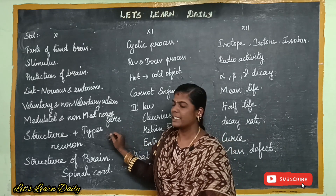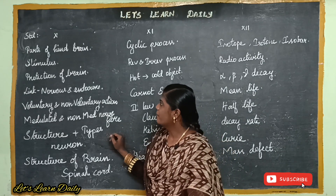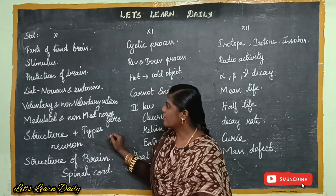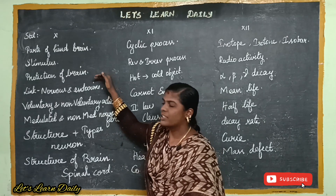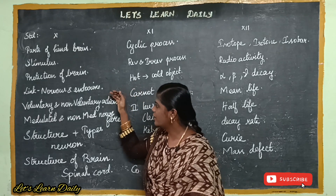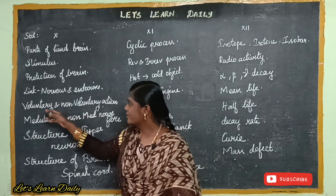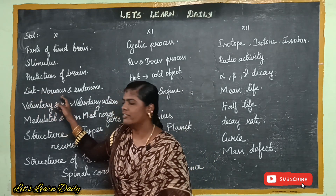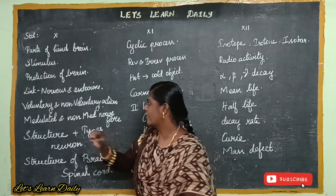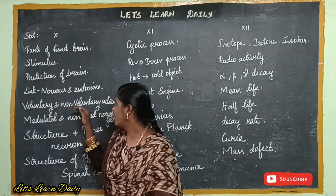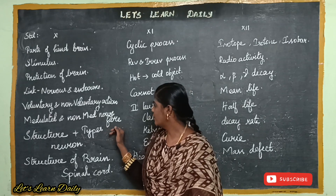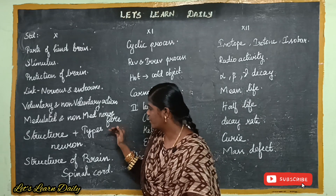We will talk about parts of the brain. What is the next stimulus? Name the structures involved in protection of the brain. What is the link between the nervous and endocrine system? That is one word. We will differentiate voluntary and non-voluntary action, and myelinated and non-myelinated nerve fibers.